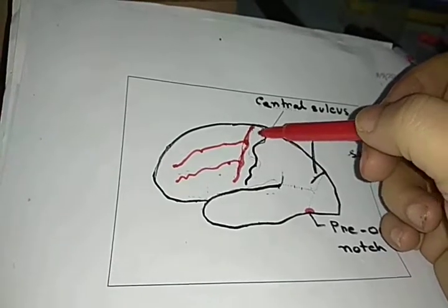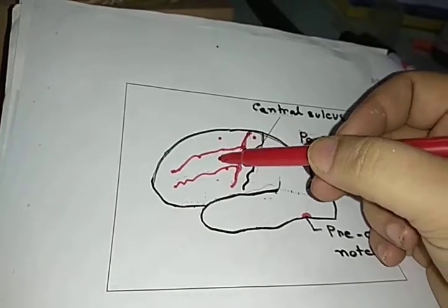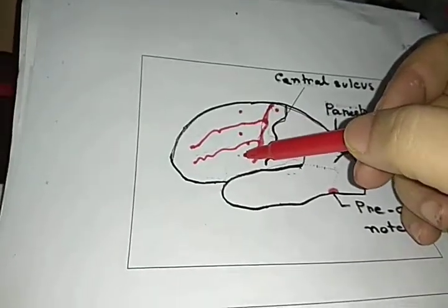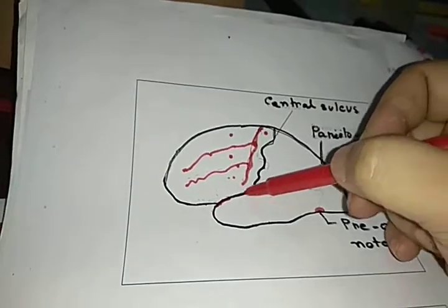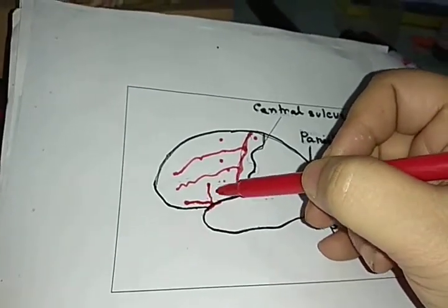Four gyri: pre-central gyrus, superior frontal gyrus, middle frontal gyrus, and inferior frontal gyrus. This is the lateral sulcus. This is the stem of the lateral sulcus. This is the posterior ramus of the lateral sulcus. This is the anterior horizontal sulcus. This is the anterior ascending sulcus.